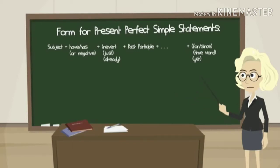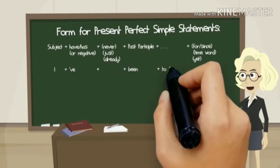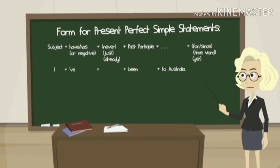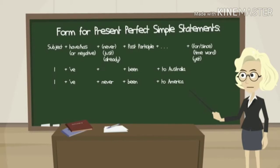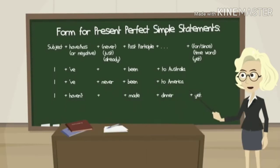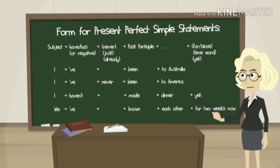Let's take a look at some examples. 'I've been to Australia' — the subject is 'I', plus 'have', plus the past participle 'been', plus 'to Australia'. 'I've never been to America' — here we used 'never' before the past participle. 'I haven't made dinner yet' — here we used 'yet' at the end of the sentence. 'We've known each other for two weeks now' — here we used 'for two weeks now' at the end of the sentence.